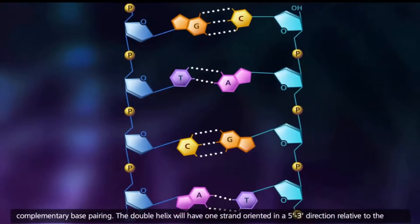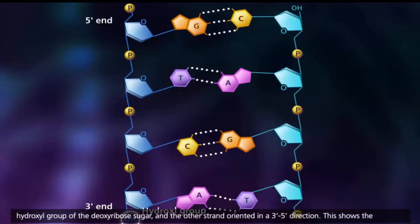The double helix will have one strand oriented in a 5' to 3' direction relative to the hydroxyl group of the deoxyribose sugar, and the other strand oriented in a 3' to 5' direction.